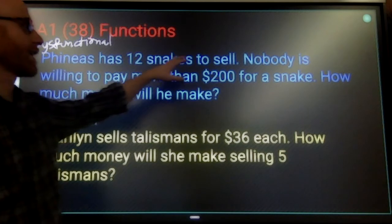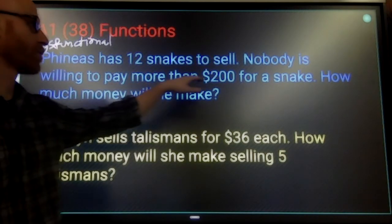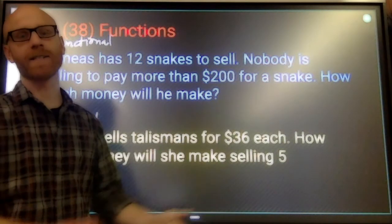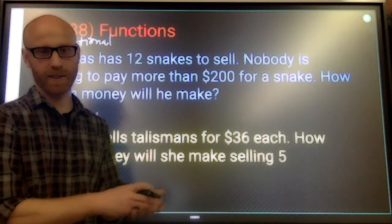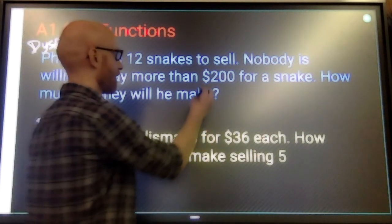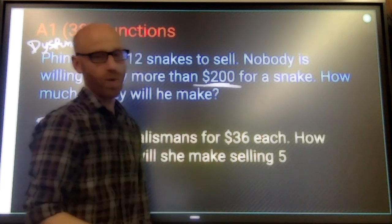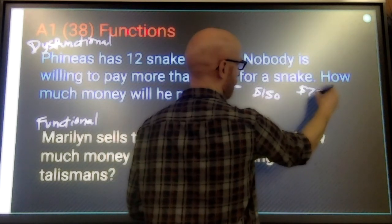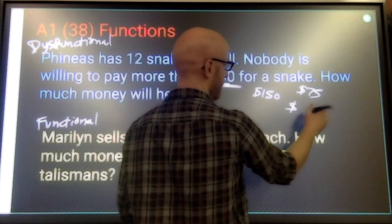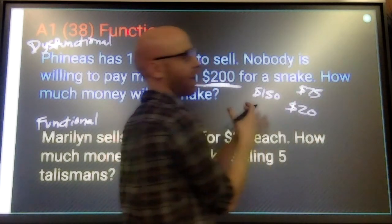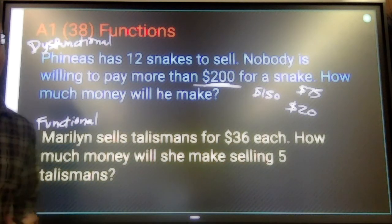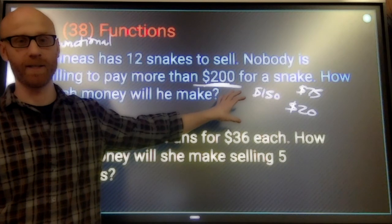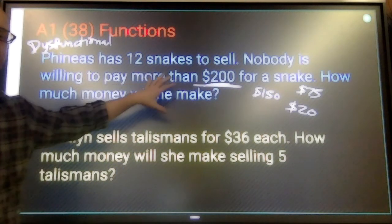Phineas, on the other hand, Phineas has 12 snakes to sell. Nobody's willing to pay more than $200 for a snake. How much money will he make? He doesn't specify a specific price. We just know it's going to be less than $200. So, he might be selling one snake for $150, and he might be selling for $75, and he might be selling another snake for $20. We don't know. We don't know what those actual prices are. So, we can't actually answer this question completely. And that's why it's a dysfunctional situation.